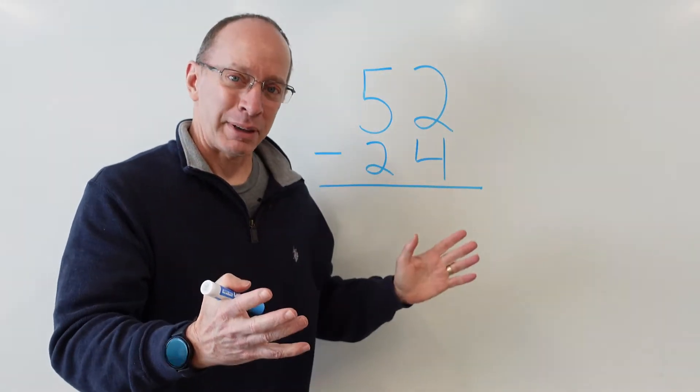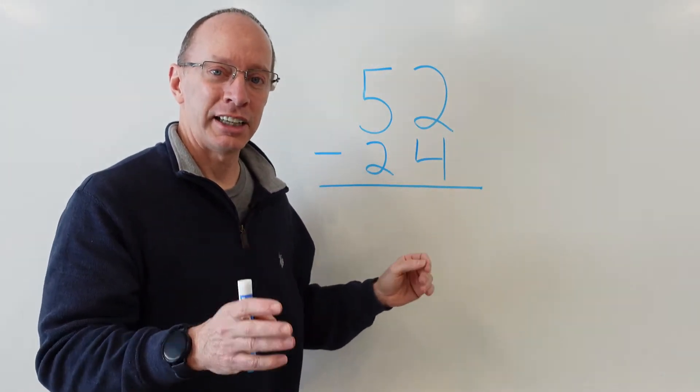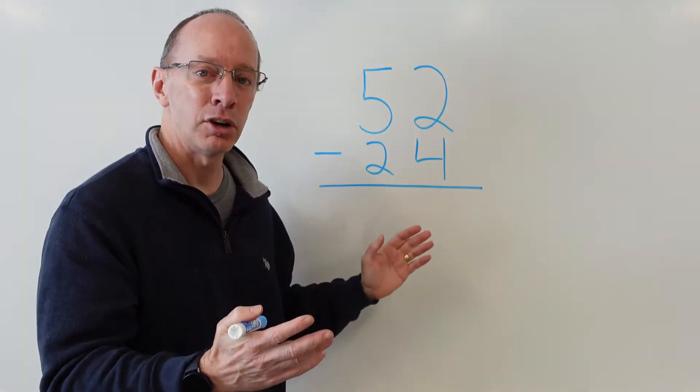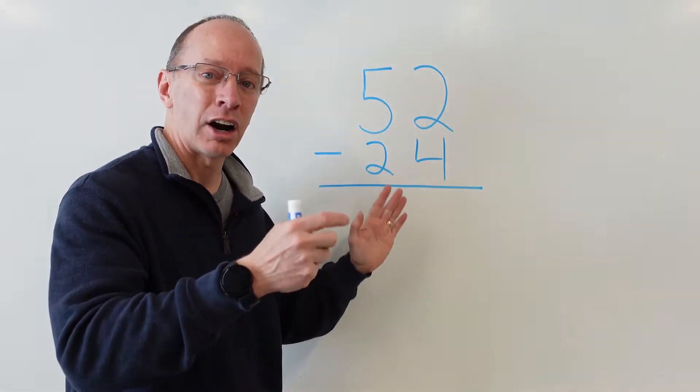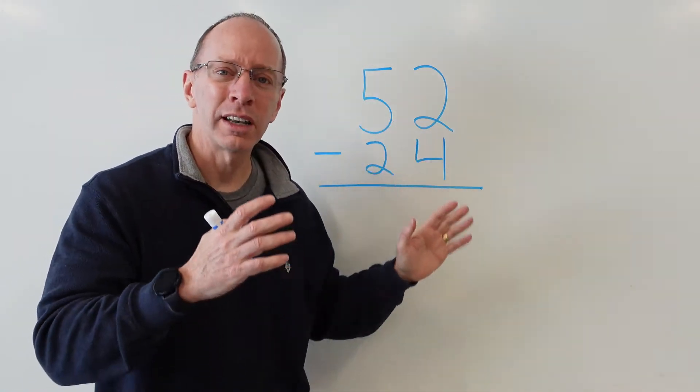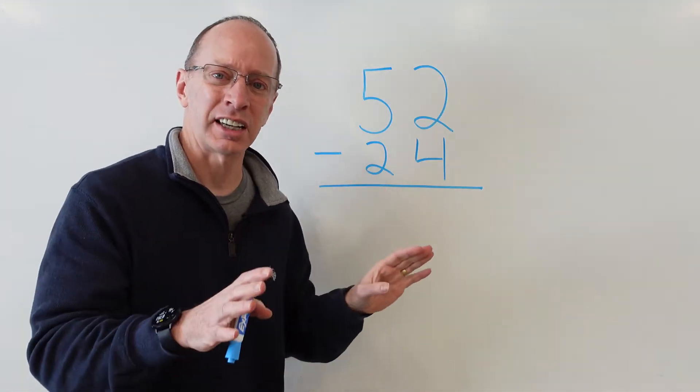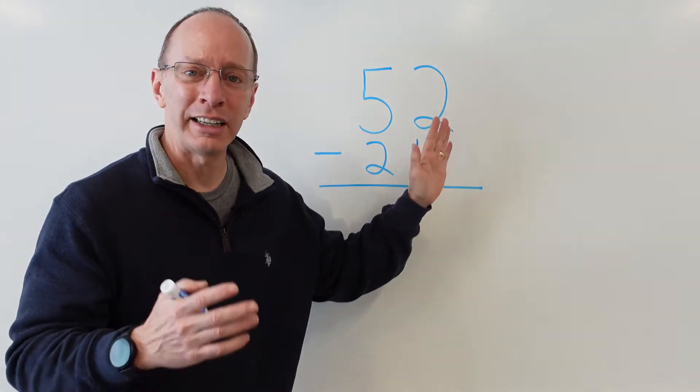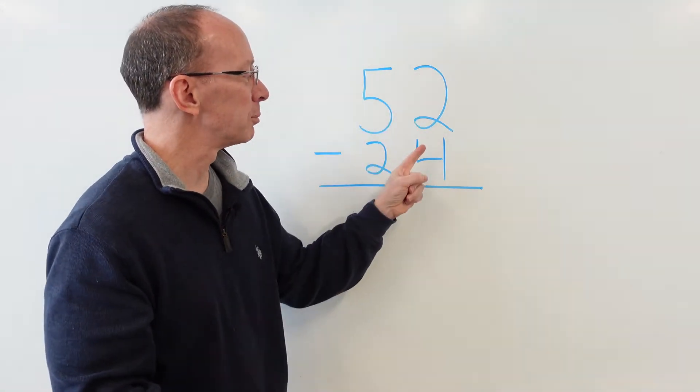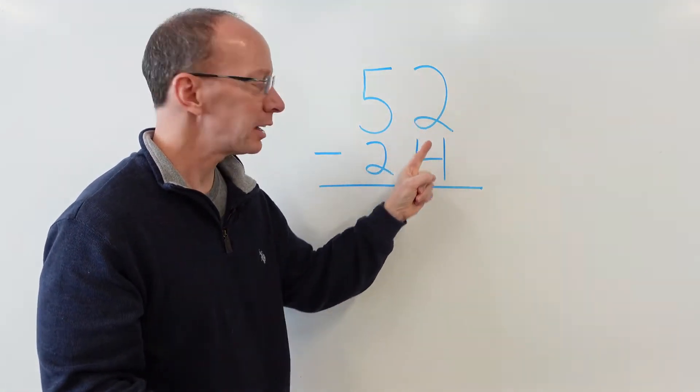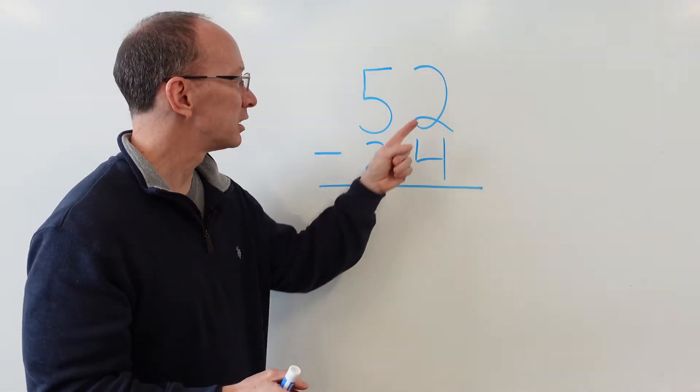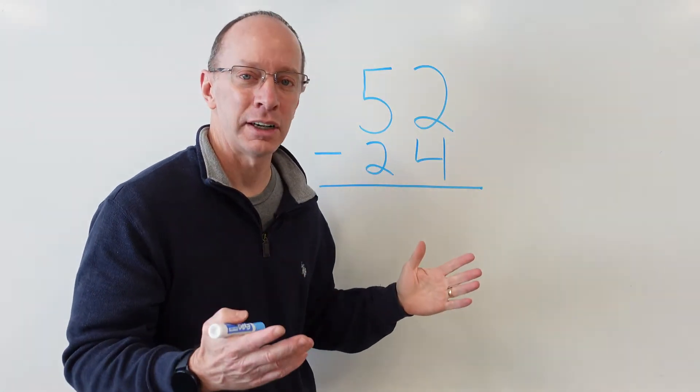The first step in double-digit subtraction is to always subtract the ones, and then you have to regroup if you need to, and then our third step is to subtract the tens. Now the part where a lot of people get stuck is do I need to regroup or not? So let's take a look at just these numbers right here, 2 and the 4. So what I need to say to myself is 2 minus 4, can I do it?